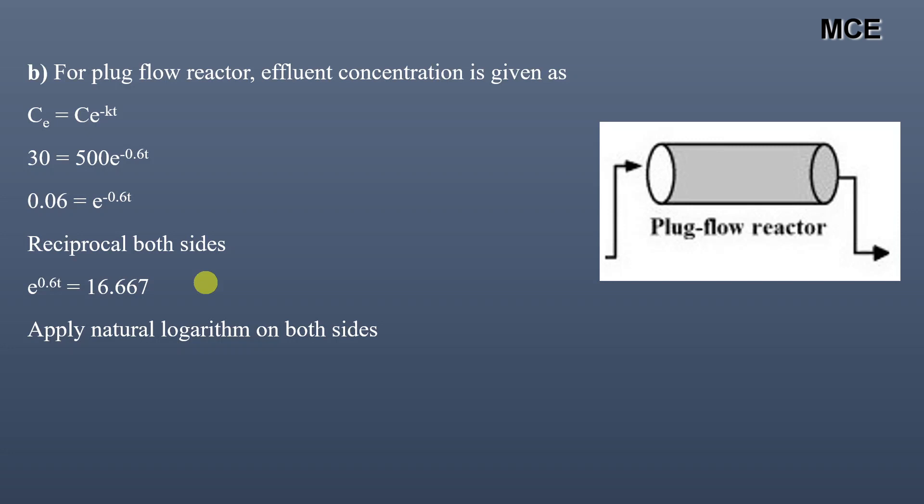Now we will apply natural logarithm on both sides. So we get 0.6t equals ln of 16.667. And then t equals ln of 16.667 divided by 0.6, which equals 4.7 hours.